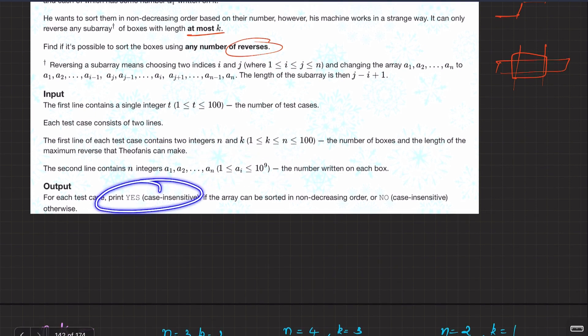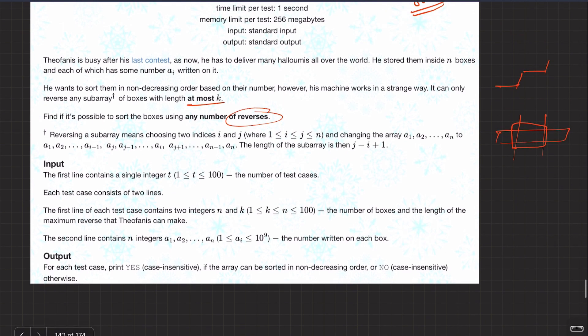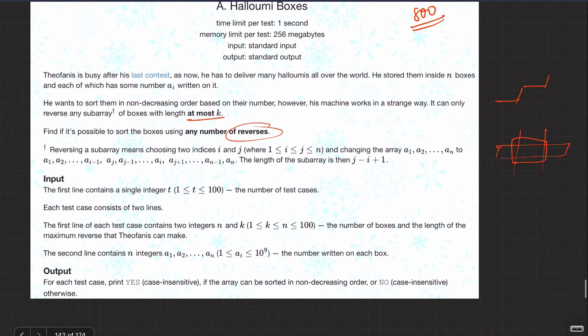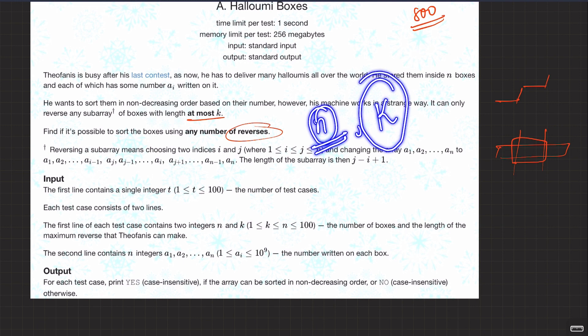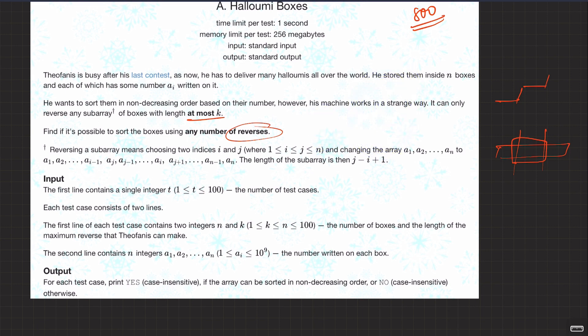For each test case, print 'yes' if the array can be sorted in non-decreasing order, or 'no' otherwise. So what this question is saying is: we have an array of size n, and at a time we can reverse a sub-array of maximum size k. This can be done any number of times — there is no limit on the reverses.